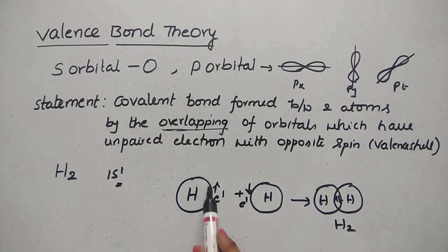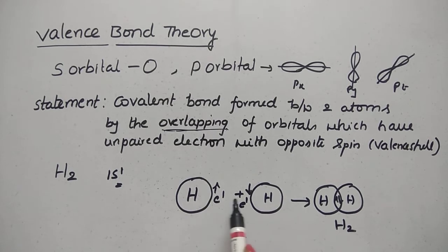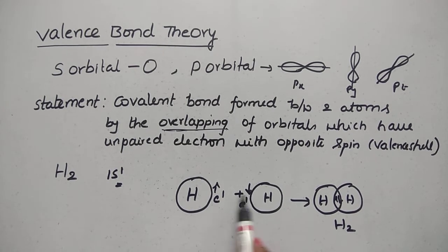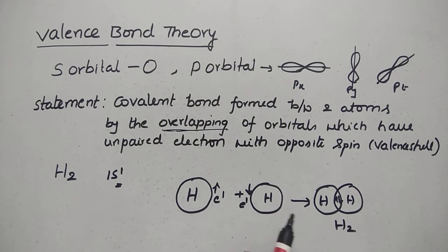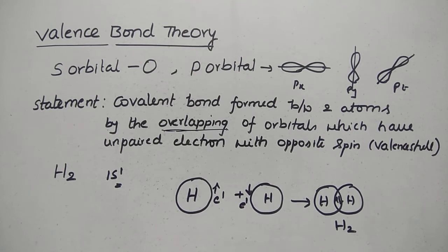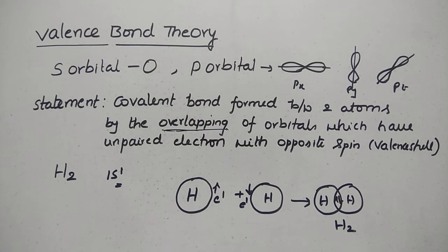The hydrogen atom has one electron in its shell. A hydrogen atom with one spin will combine or overlap with the electron cloud of another hydrogen atom with opposite spin. This overlapping of two electron clouds forms the H2 molecule. The greater the overlap, the stronger the bond.